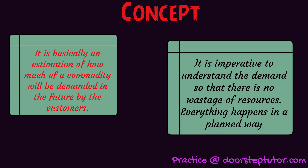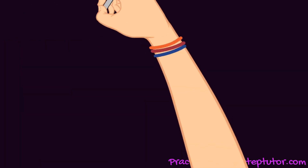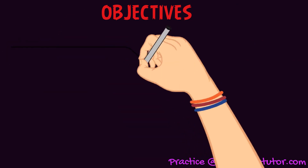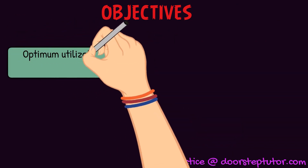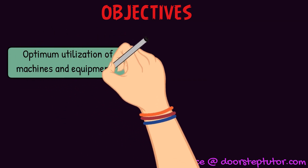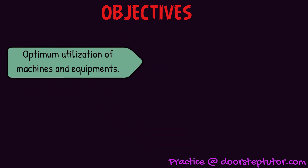Now coming on to the objectives of demand forecasting. We use various machines and tools while producing our goods, so it is very important that we use them in an optimum manner. When everything is pre-planned, we know what our demand will be, so we will plan everything accordingly and there will be efficient utilization of our machines, no wastage of resources, and timely production of goods and services.